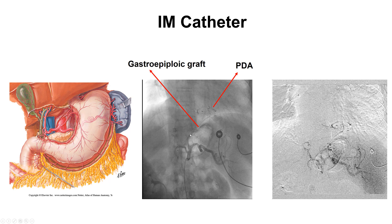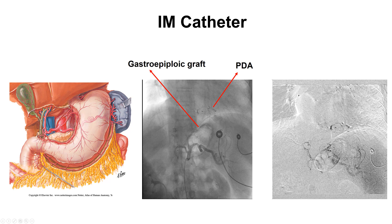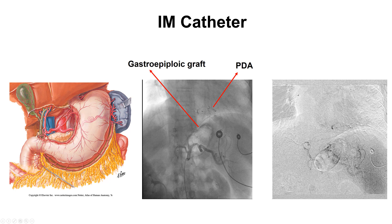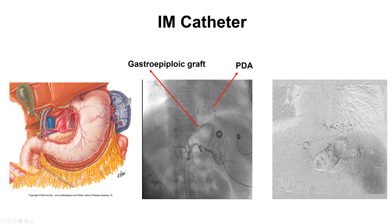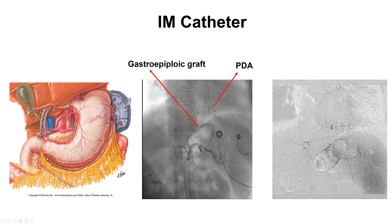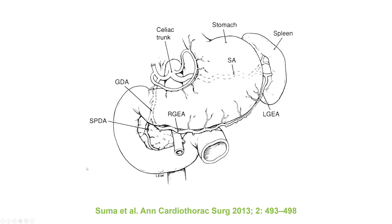This is an example of a gastroepiploic graft, and here is a brief overview of the anatomy. This is the celiac trunk — it has three main branches: the splenic artery, the left gastric artery, and the common hepatic. The common hepatic gives the gastroduodenal artery, which then gives rise to the gastroepiploic artery. On a different illustration, here is the celiac trunk again, the gastroduodenal artery, common hepatic, gastroduodenal, and then the right gastroepiploic artery.